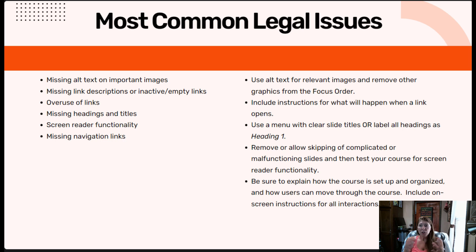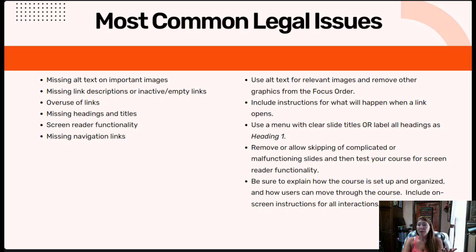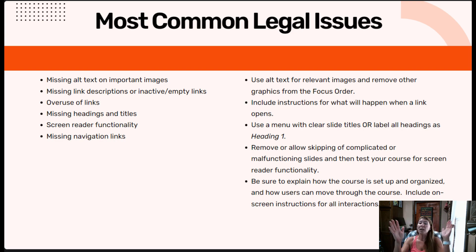You can provide a menu in your course. Label all slide titles with the heading label. If there are slides and interactions that might give a screen reader trouble, add a skip button to be sure screen readers or keyboard users don't get stuck and have a keyboard trap. Provide instructions for how the course is organized and navigated and include on-screen instructions such as 'click each card to learn more.' Telling users about the built-in Storyline keyboard shortcuts is also a great idea.